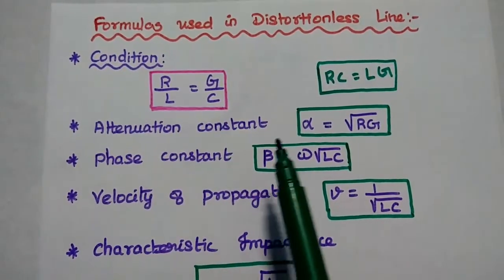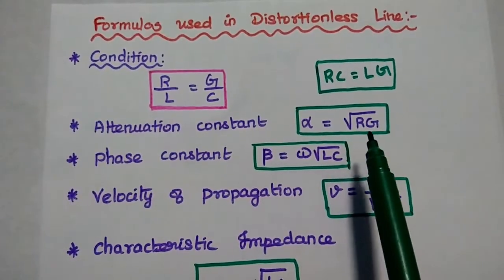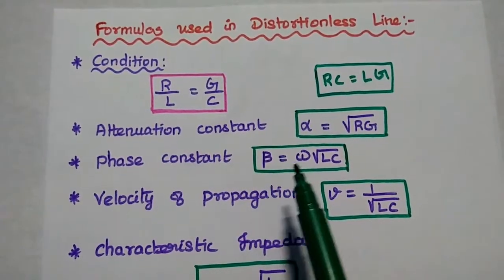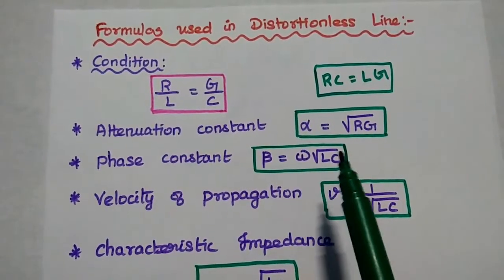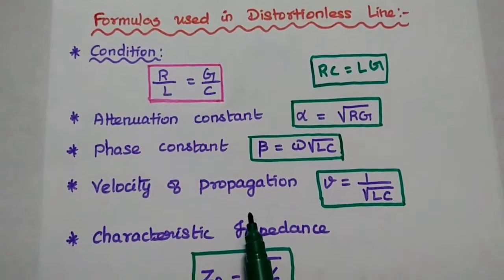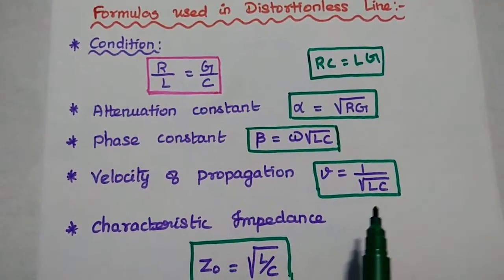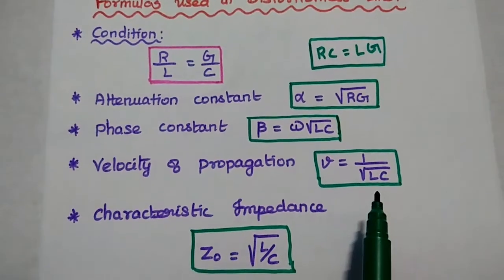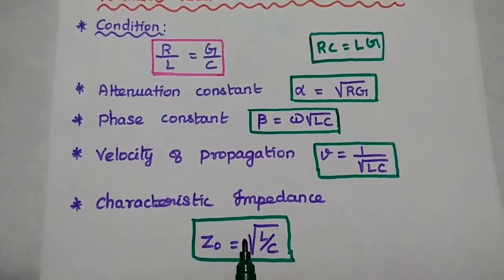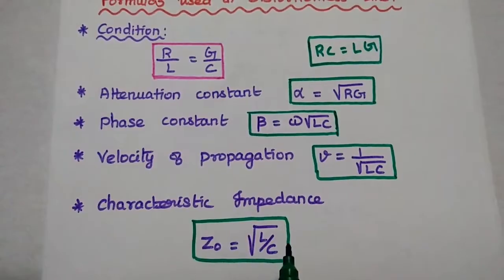The attenuation constant alpha is equal to square root of R G. Phase constant beta is equal to omega into square root of L C. Velocity of propagation V is equal to 1 by square root of L C, and the characteristic impedance Z0 is equal to square root of L by C.